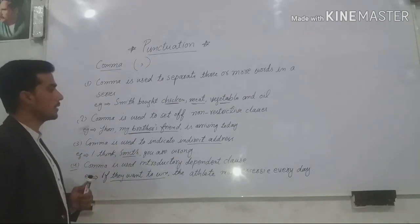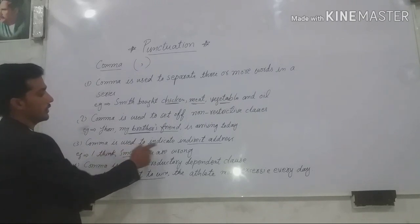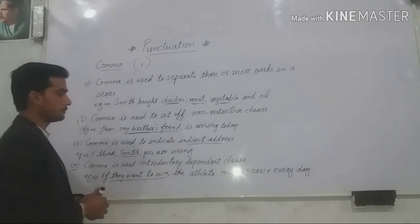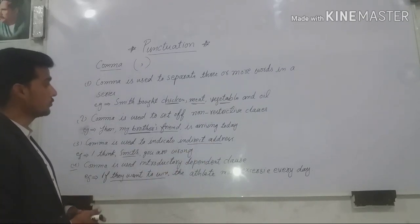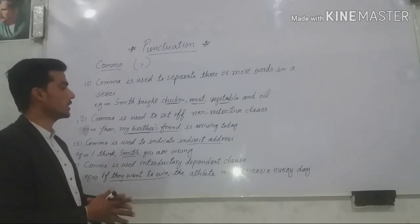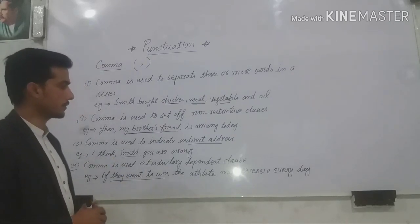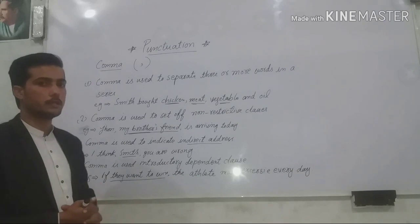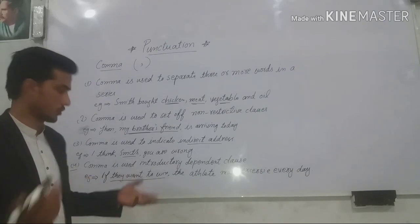The third use of comma is, comma is used to indicate direct address. So mostly, the students get confused in the usage of direct address. So comma can also show the direct address in written language. Like how?